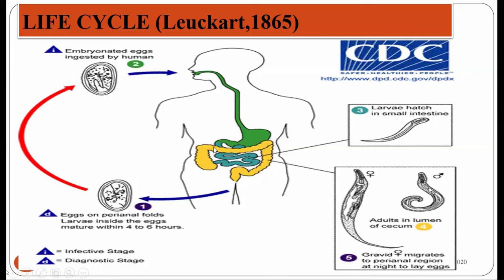The contaminated food or drinks containing embryonated eggs of Enterobius vermicularis is ingested by a healthy person. The egg goes to the gastrointestinal tract. In the small intestine, the digestive juices dissolve the double-walled cell membrane of the egg. As a result, the tadpole-shaped larva present in the egg emerges out. This larva matures into adult male and female worms in the small intestine, then migrates to the cecum and vermiform appendix.